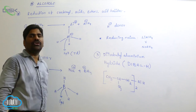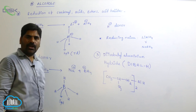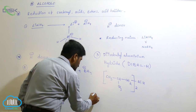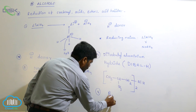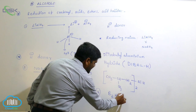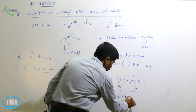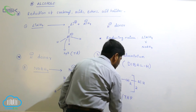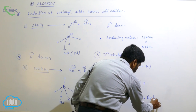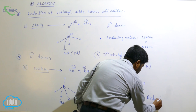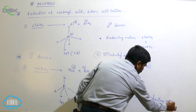The third reducing agent is diisobutyl aluminium hydride (DIBAL-H), which has two isobutyl groups attached to aluminium. A fourth reducing agent is diborane (B₂H₆) in the presence of tetrahydrofuran (THF), which also acts as a reducing agent.